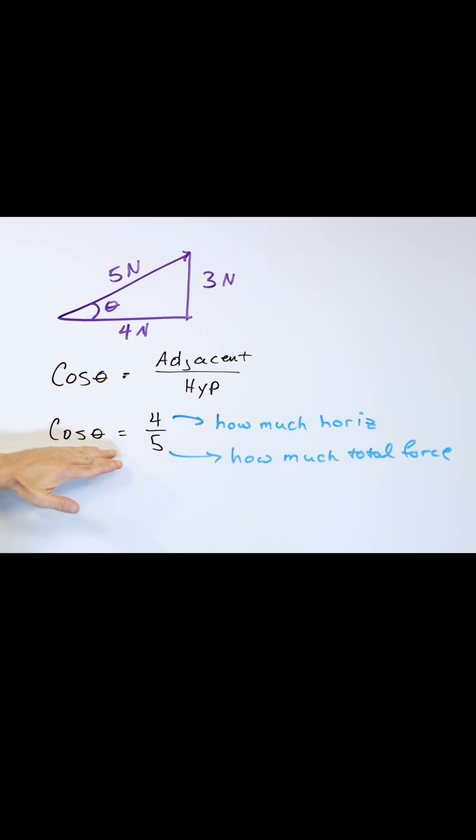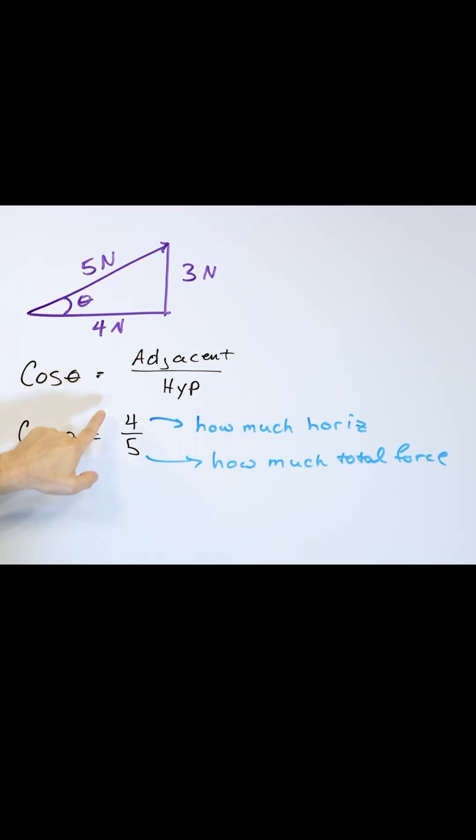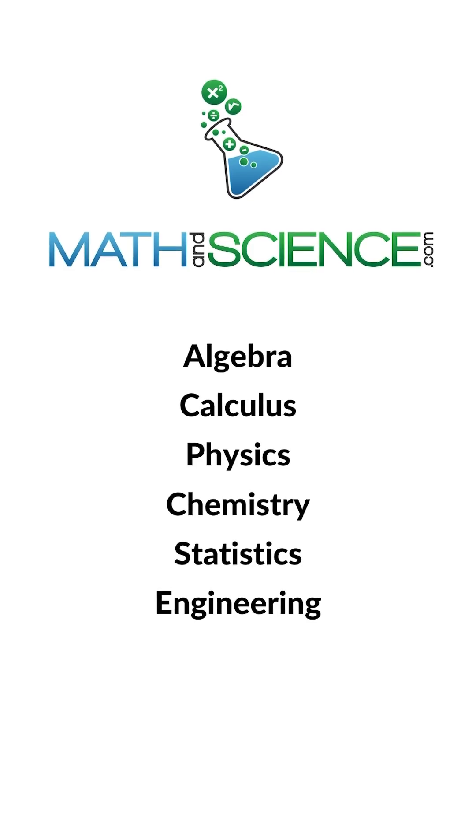So when I tell you that the cosine is four fifths, whatever this number comes out to, I could punch it in a calculator and calculate if I want, but it's just a pure fraction. What it's telling me is the fraction of the total force that exists horizontally, four divided by five. It's very close to one because most of the force actually is in the horizontal direction. Learn anything at mathandscience.com.